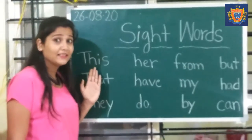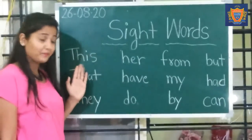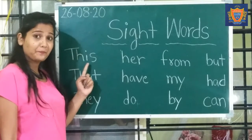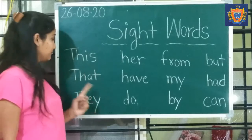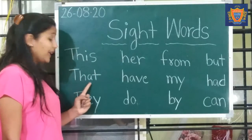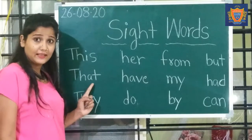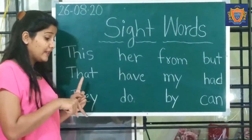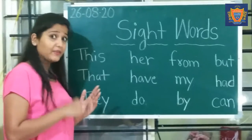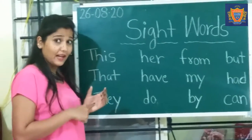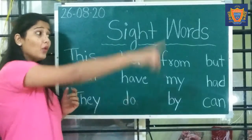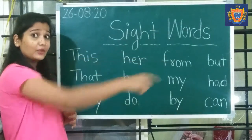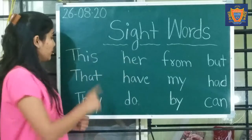This. T-H-I-S. This. T-H-A-T. That. When something is near to us, how do we mention it? This. This is a glass — if the glass is in my hand, we say 'this is the glass.' But if the glass is over there or at a distance, then we call it 'that.'